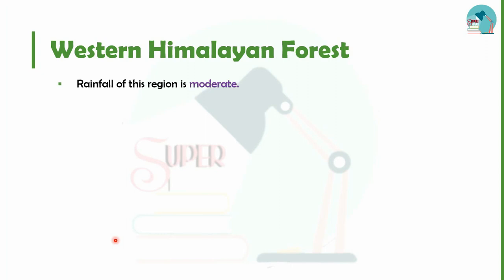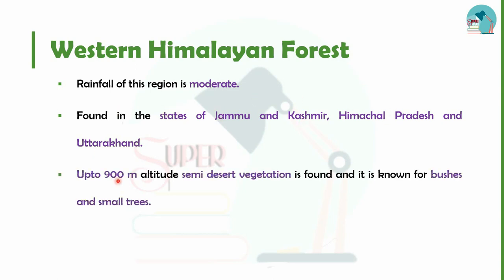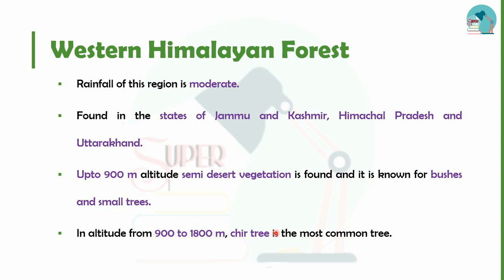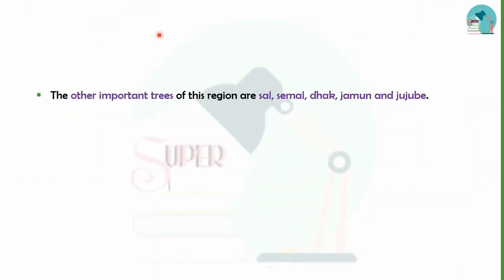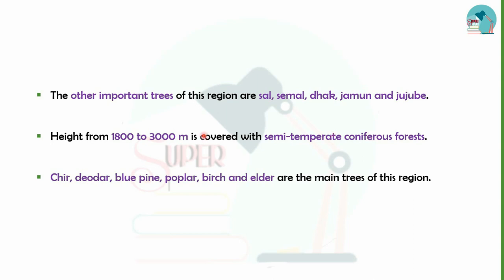Next is Western Himalayan Forest. In Western Himalayan Forest, rainfall is very moderate. This covers Jammu and Kashmir, Himachal Pradesh, and Uttarakhand. Up to 900 meters altitude, there is semi-deciduous vegetation with bushes and small trees. Important trees include Sal, Semal, Dak, Jamun, and Ziziphus. At 1800 meters, there is semi-temperate coniferous forest with trees such as Deodar, Blue Pine, Poplar, Beech, and Alder.